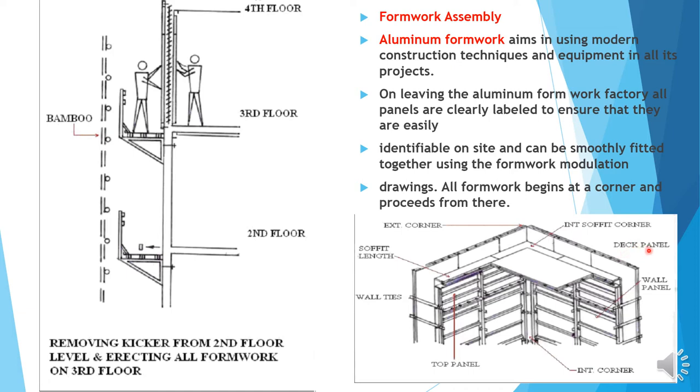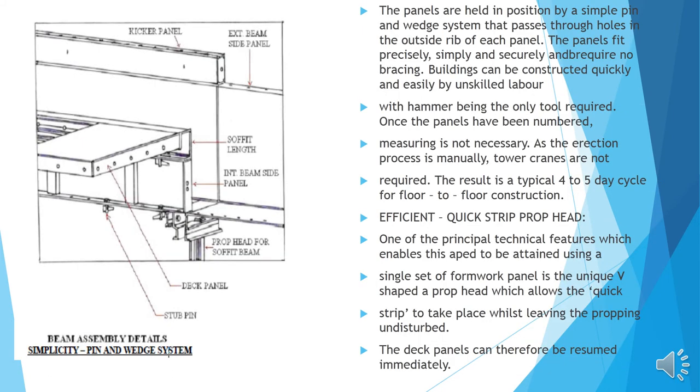Of how the corner wall panels has been erected. This is a soffit length, this is an internal soffit corner wall, this is a deck panel, this is known as a slop deck panel, these are all the wall panels that have been erected, this is the methodology of how a top panel has to be erected, then you have beam panels and the deck slab.